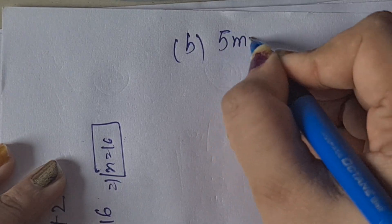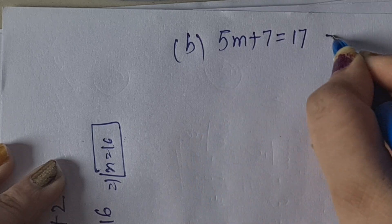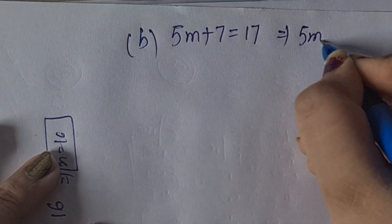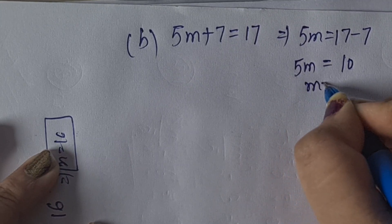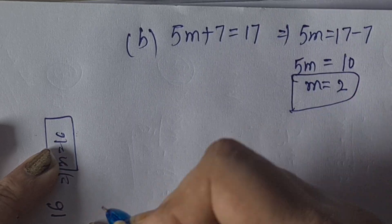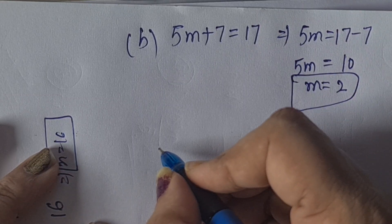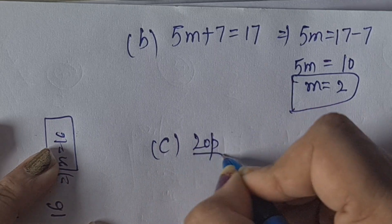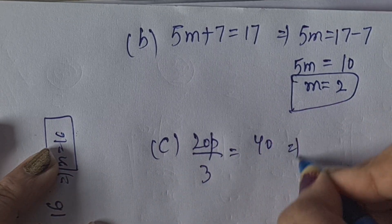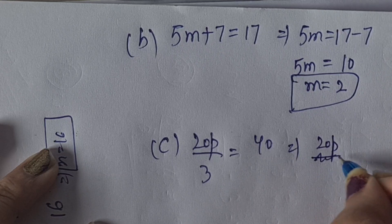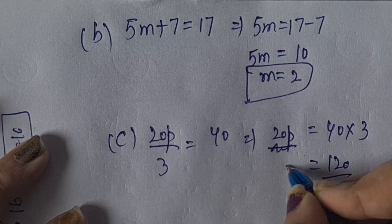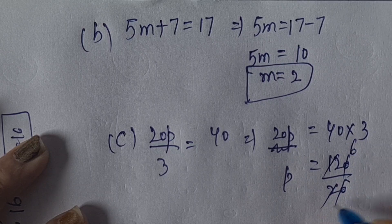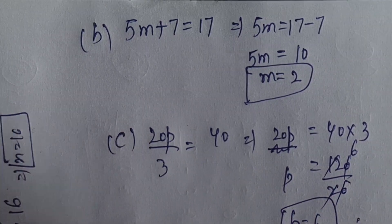B part: 5M + 7 = 17. So 5M = 17 minus 7 = 10. M = 10 by 5 = 2. M equal to 2 is the answer. C part: 20P upon 3 = 40. So 20P = 40 into 3 = 120. P = 120 upon 20 = 6. The rule is: multiply converts to divide, divide converts to multiply.